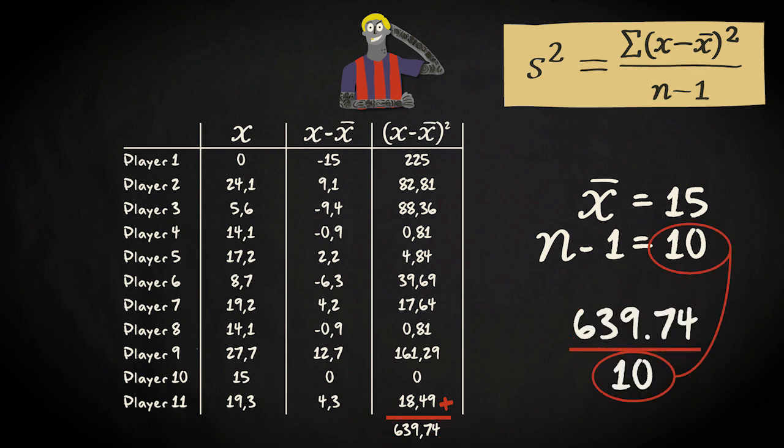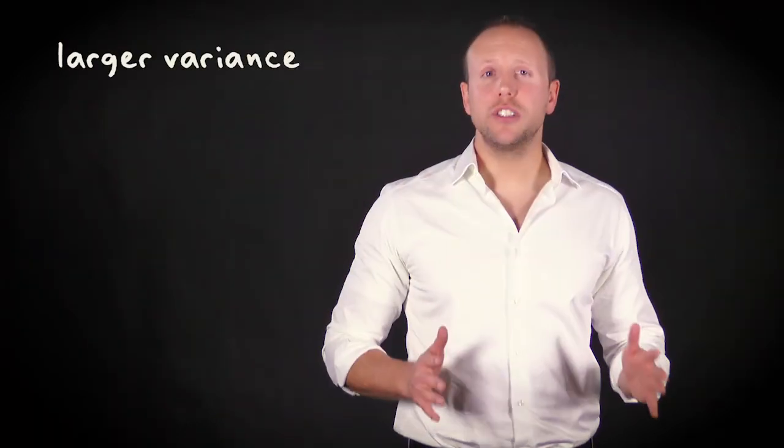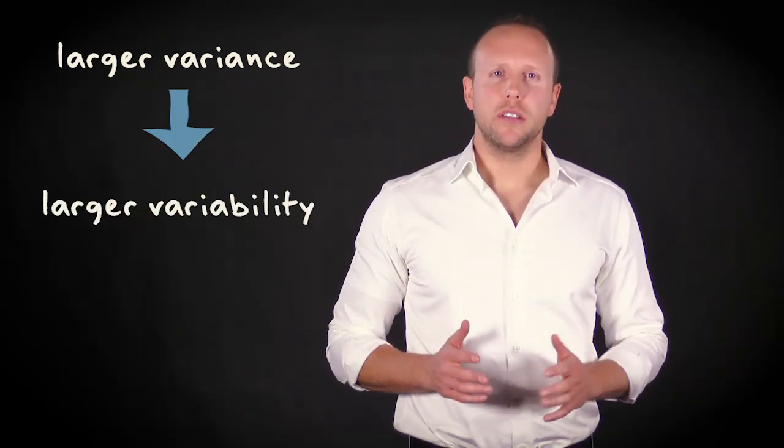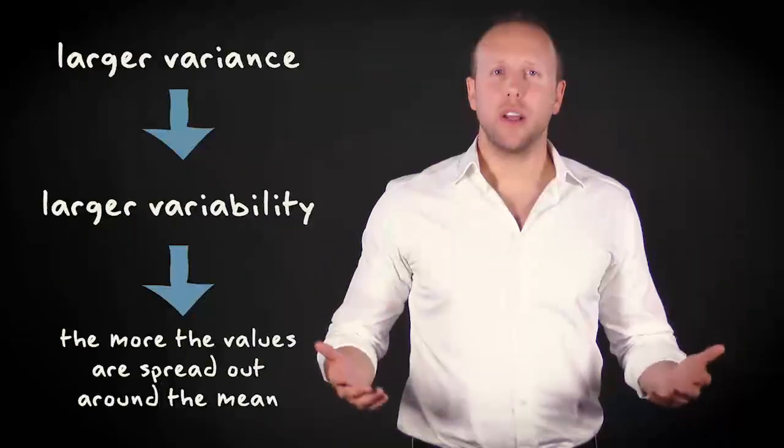639.74 divided by 10 equals 63.97. That's our variance. The larger the variance, the larger the variability. That means, the larger the variance, the more the values are spread out around the mean.